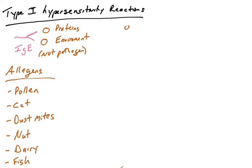When you think about common allergies—allergies to pollen or cat dander, saliva, dust mites, individuals who have nut allergies such as peanut allergies, dairy allergies or fish allergies—many times these are Type I hypersensitivity reactions.